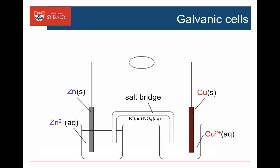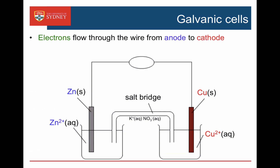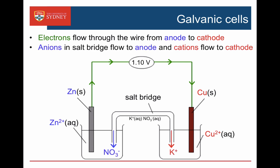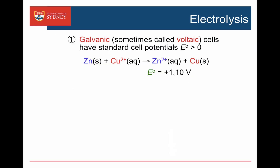Here's our cell again. Electrons flow through the wire from the anode to the cathode, and we measure our cell potential. When that happens, anions in the salt bridge flow into the anode side, and cations from the salt bridge flow into the cathode side. Galvanic cells have positive cell potentials — they're chemical reactions that would have happened anyway, which we're harnessing in a galvanic cell to produce electricity.